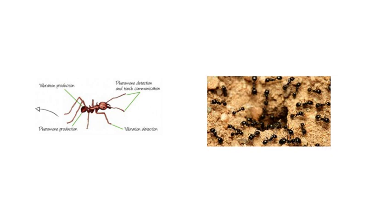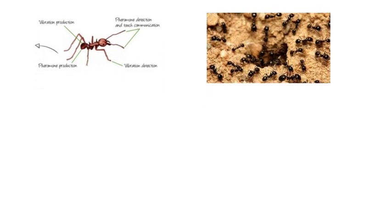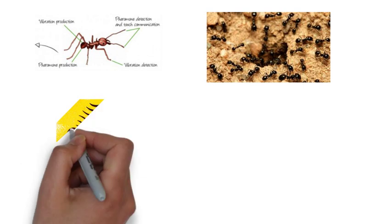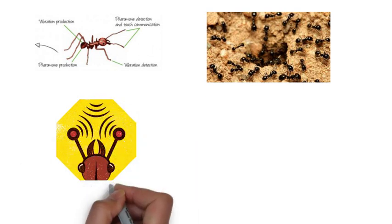Nowadays, it is well known that ants have their own language, which they use to communicate with each other. Similar to humans, ants use body language and communicate through pheromones, sounds and touch.